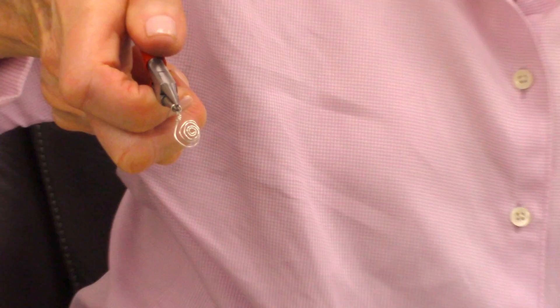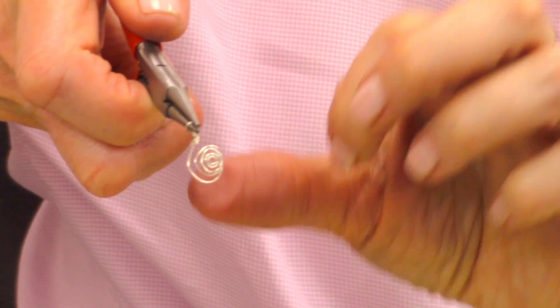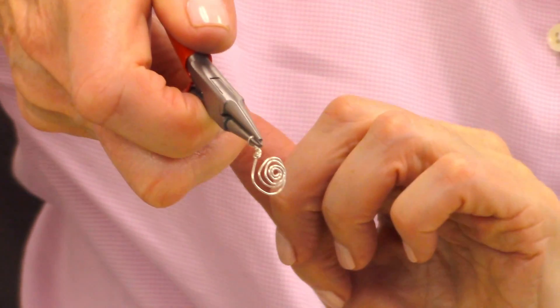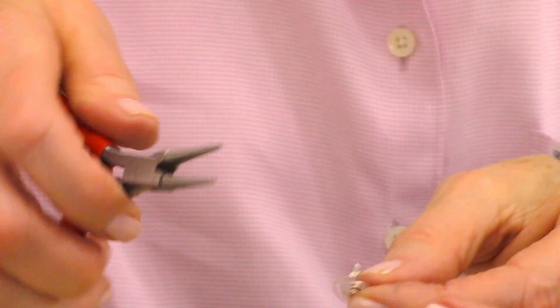And voila! A handmade curl coil little loop that you can use as a dangle on an earring or in a project. If you have any questions about this project or any others, please contact us at DIY@plasco.com.